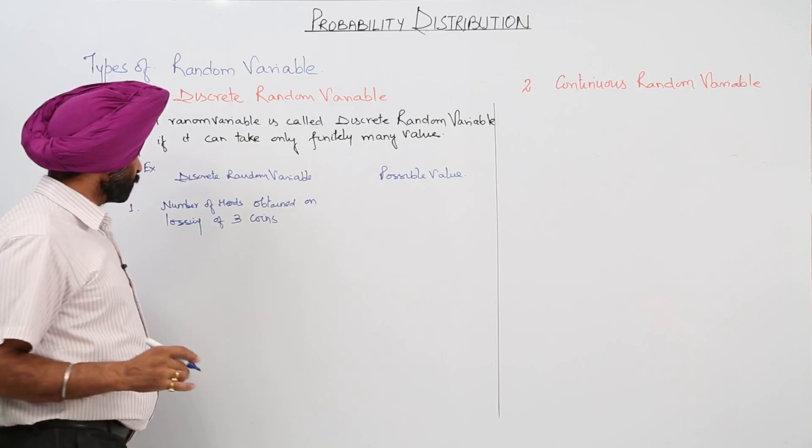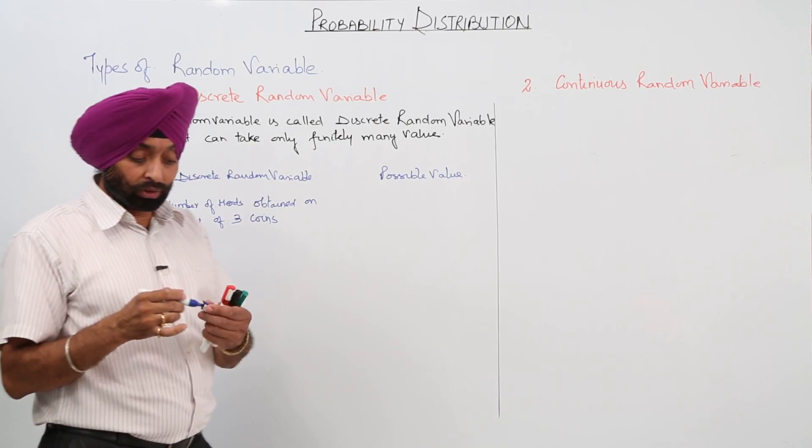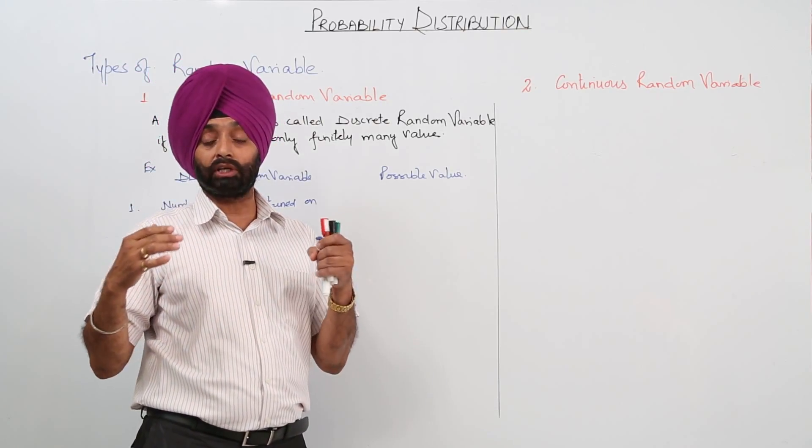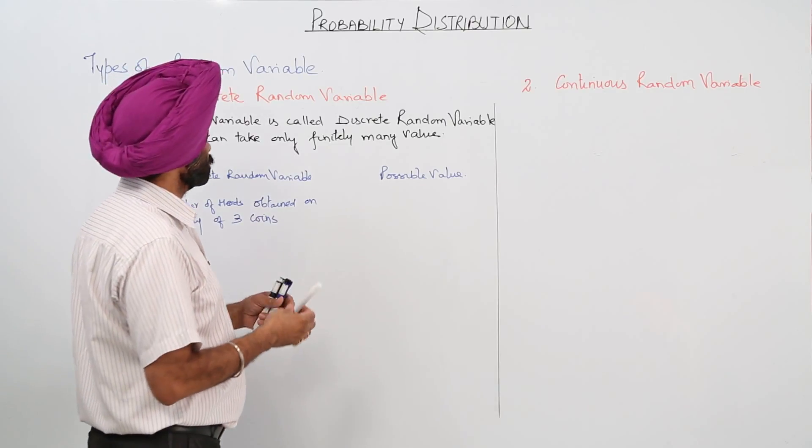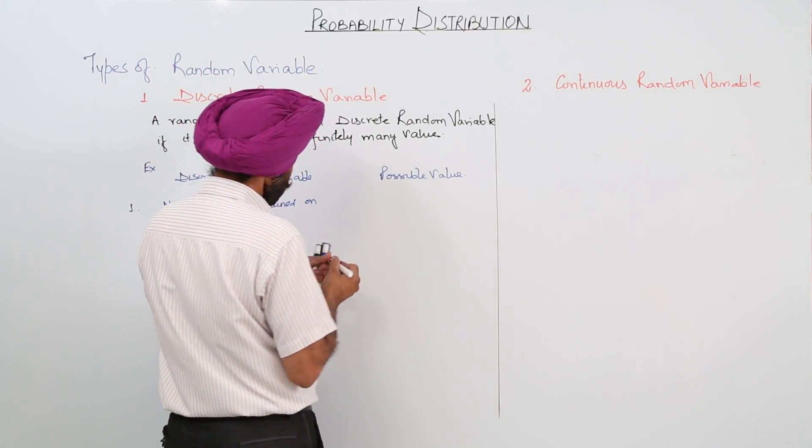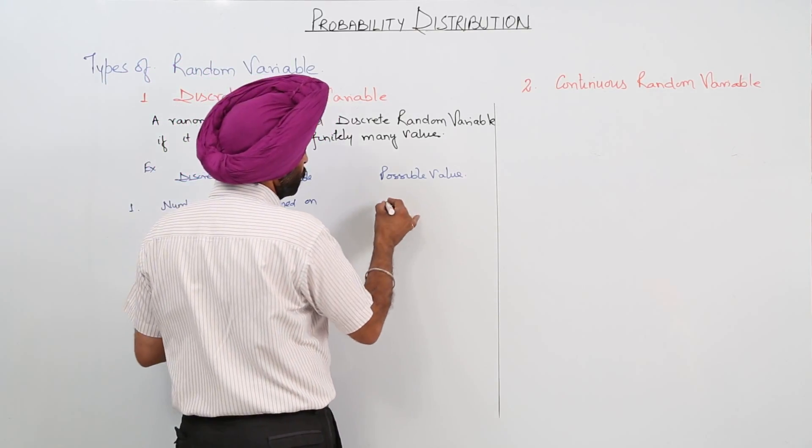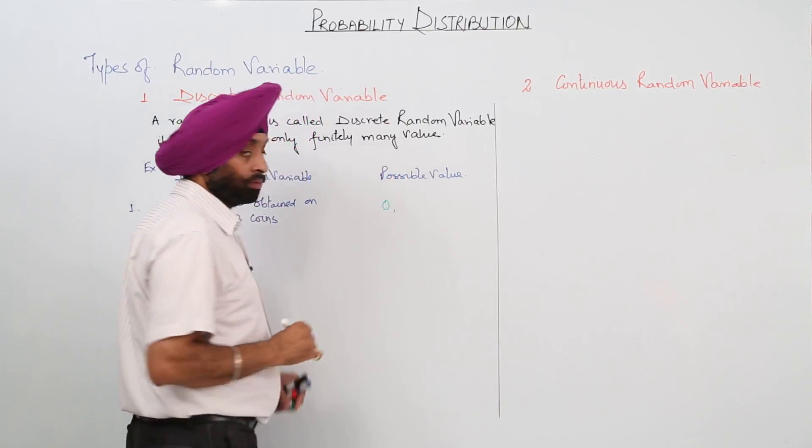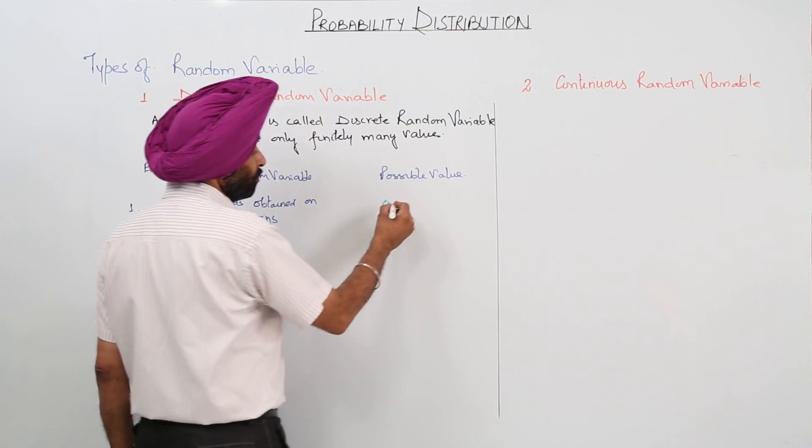Now what are the number of heads obtained on tossing of three coins? What are the possibilities for the numeric values? For the possibilities we are having, there can be no head, one, there can be one head.